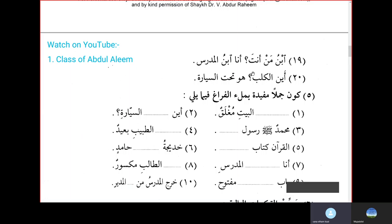Ibnu man Anta — whose son are you? Replying: Ana Ibnul Mudarrisi — I am the teacher's son. Ainal Kalbu — where is the dog? It is under the car. We'll stop here inshallah, we'll continue next time. Jazakallahu Khayran.